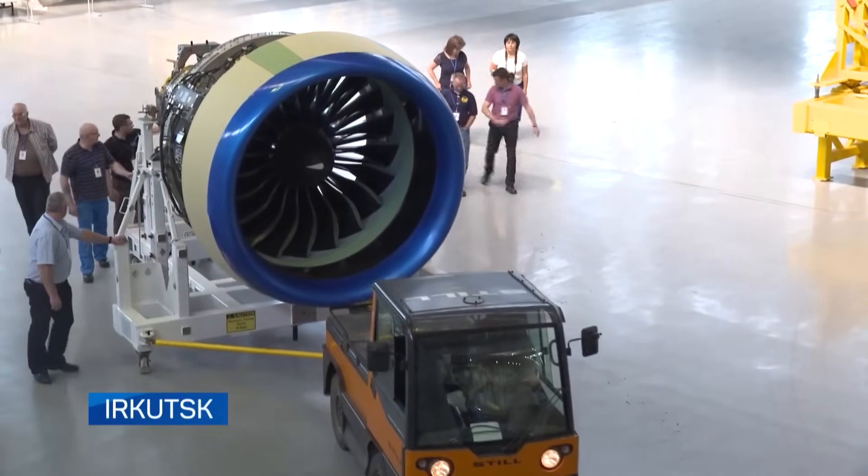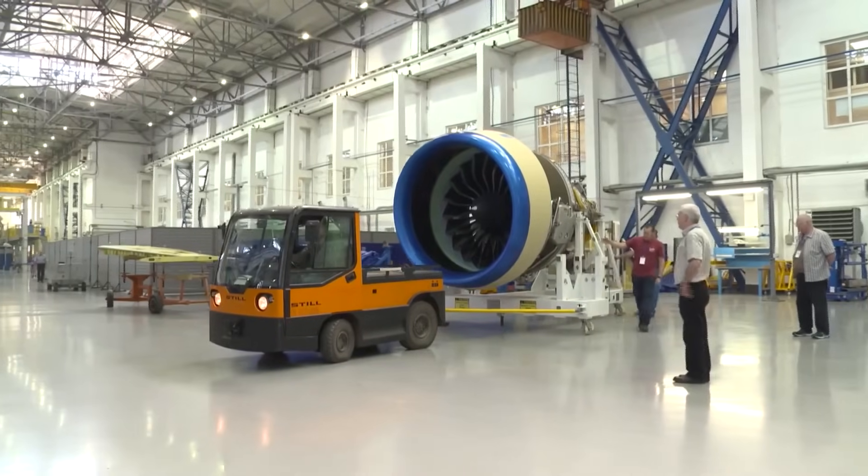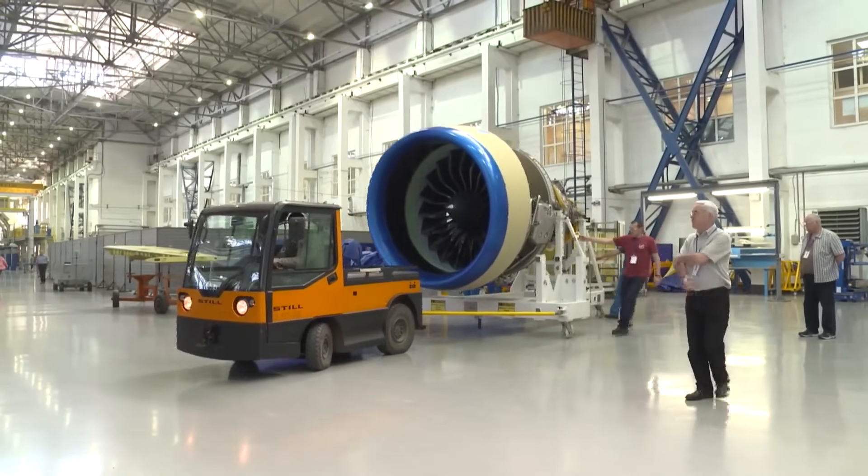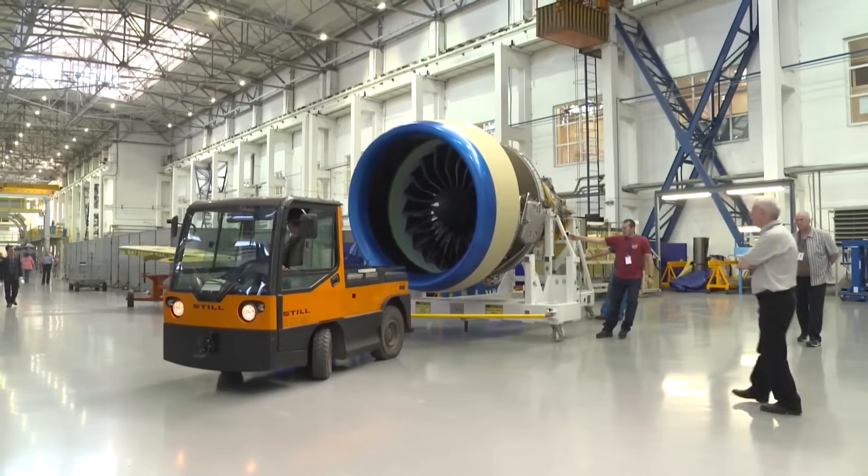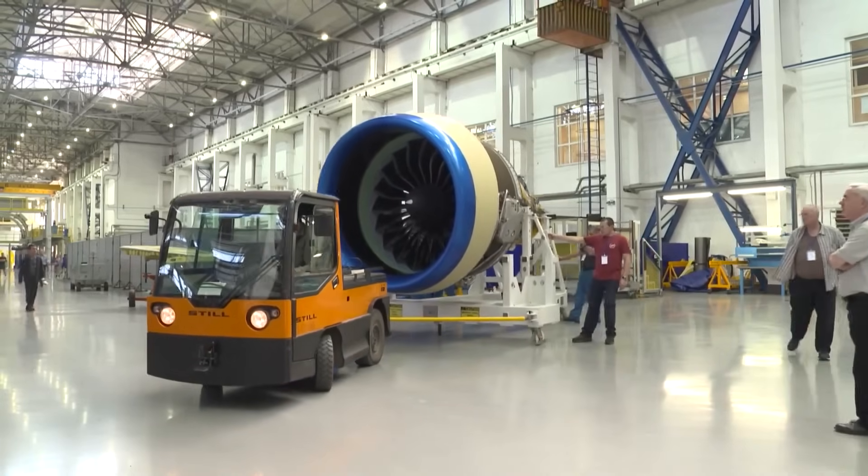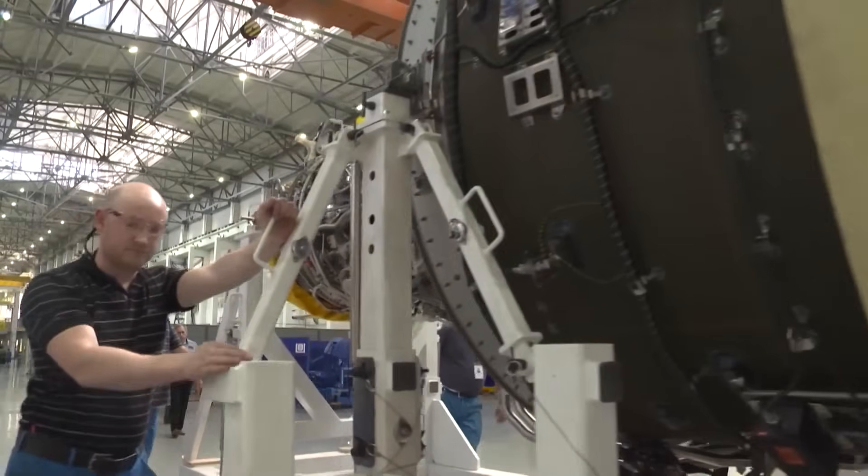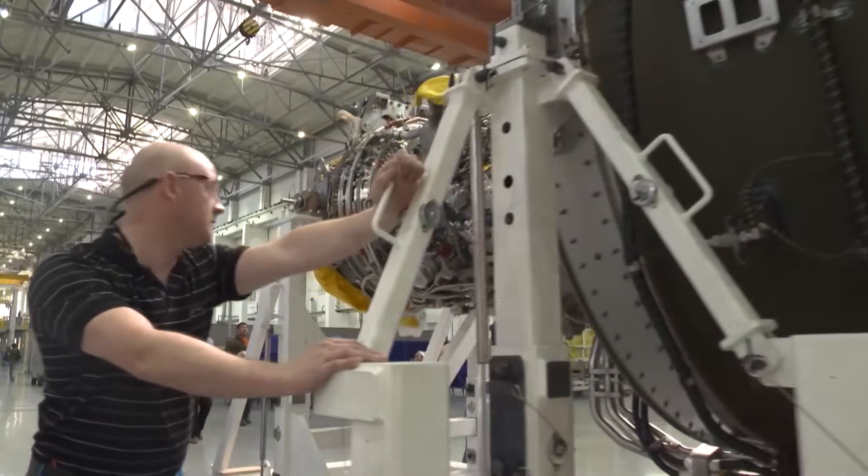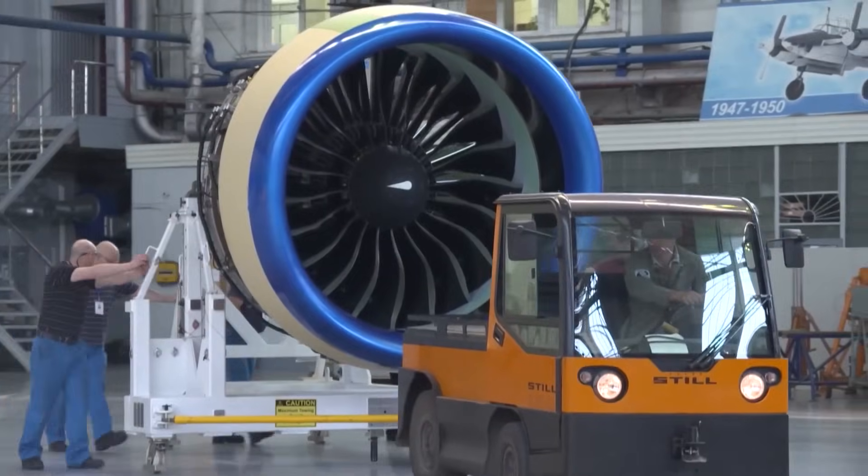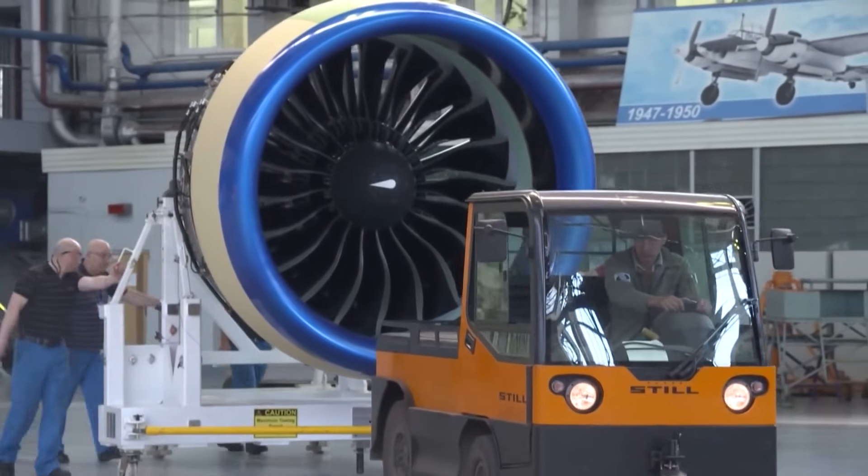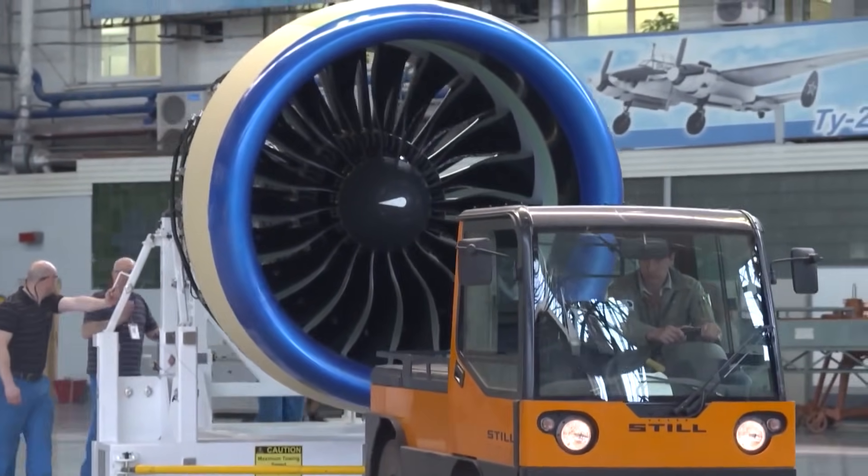In order to increase its competitiveness, the Irkut Corporation has decided to install two types of engines on the aircraft: a Russian PD-14 and an American PW-1400G. The choice of the suitable motor is up to the client. The MC-21 will perform its first flight with the engines manufactured by the American company, Pratt & Whitney, already installed on the plane.